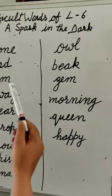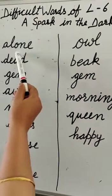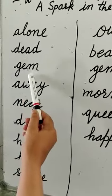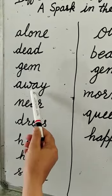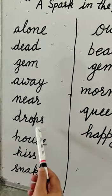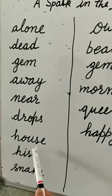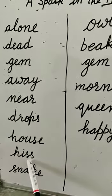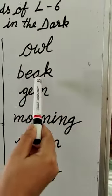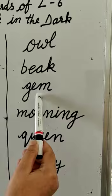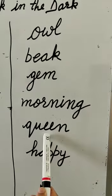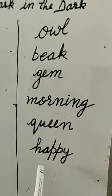Now read them again: alone, dead, gem, away, near, drops, house, his, snake, owl, beak, gem, morning, queen, happy.